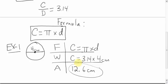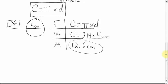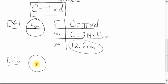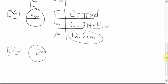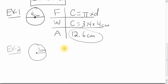That's how I'd like you to show your work — being particular about having everything directly underneath the formula. Next example: what if you have a circle where we're given a different measurement? What's the circumference of this circle?